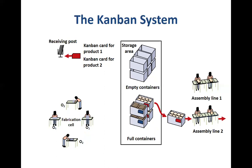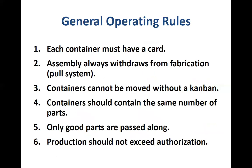The general operating rules for a kanban system are: first, each container must have a card for it to be moved from one point to another or for production to begin. Second, assembly will always withdraw from fabrication — it has to be a pull system, because otherwise fabrication would build too much work-in-process inventory between the fabrication cell and assembly. Only when assembly wants something should fabrication make it. Third, containers cannot be moved without a kanban card, which signals that a particular container has to move from one process to another.